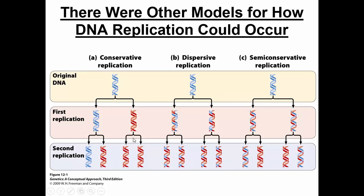The second type of DNA replication was something called dispersive replication. In dispersive, what they thought was that the DNA double helix disintegrates — almost like a puzzle being pulled apart — and then all the individual pieces or fragments are replicated and brought back together, almost like taking a puzzle out of a box, dumping it, replicating all the pieces, and then putting them back together to make two identical puzzles. In this situation, each new strand alternates between old and new material.